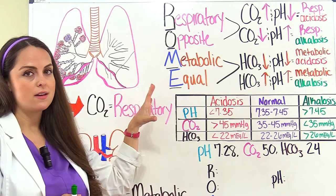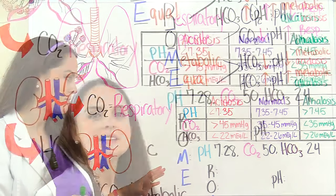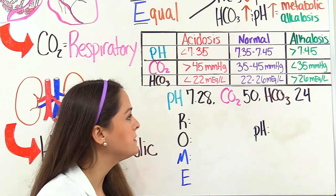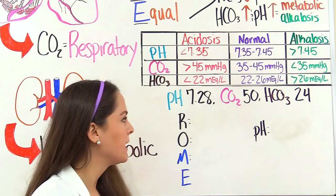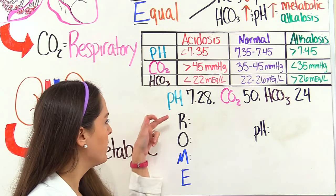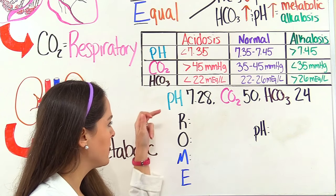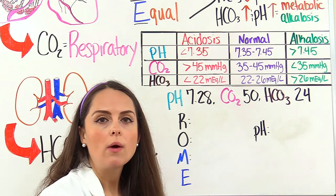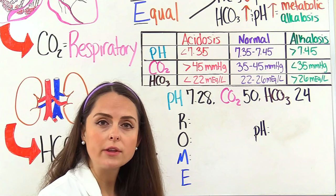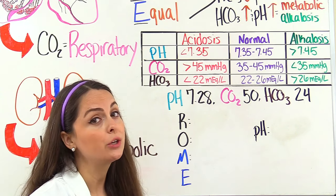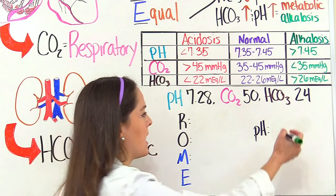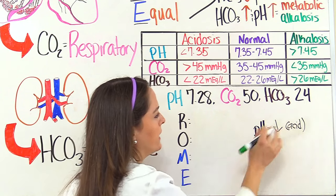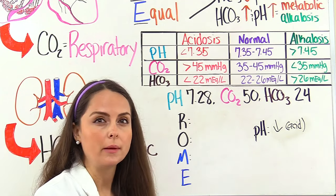Let's work some problems. Our first problem: blood pH of 7.28, CO2 of 50, bicarb of 24. I've set up ROME — Respiratory Opposite, Metabolic Equal — and our blood pH. Normal pH is 7.35 to 7.45; we're at 7.28, so we're low and acidotic. I'll put a down arrow and write 'acid.'